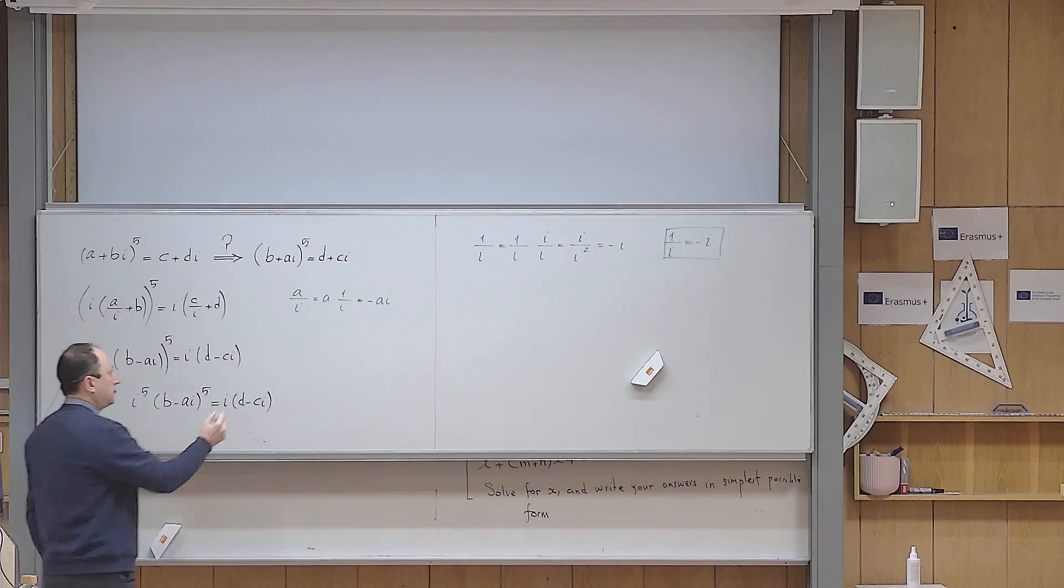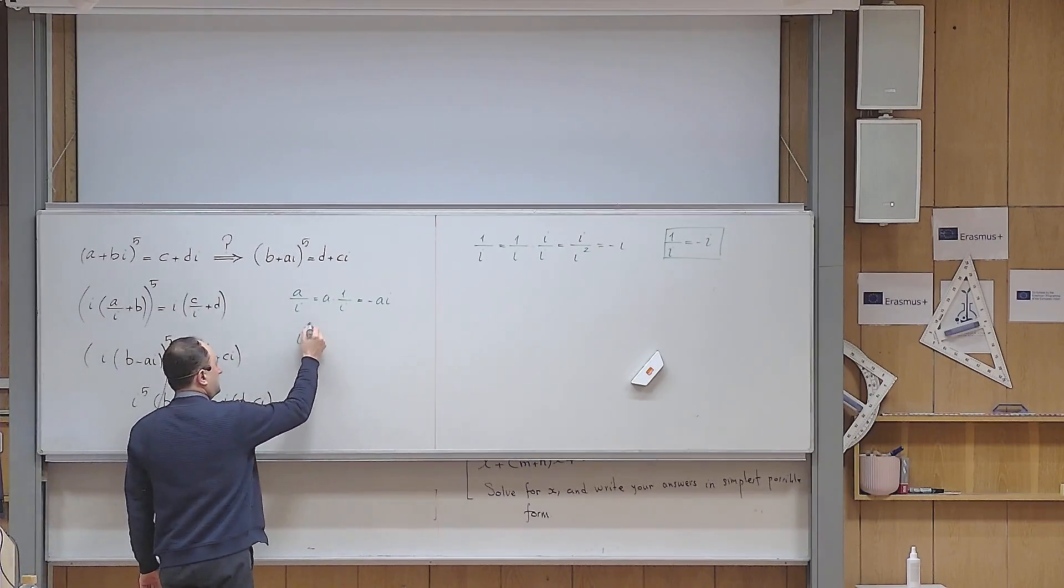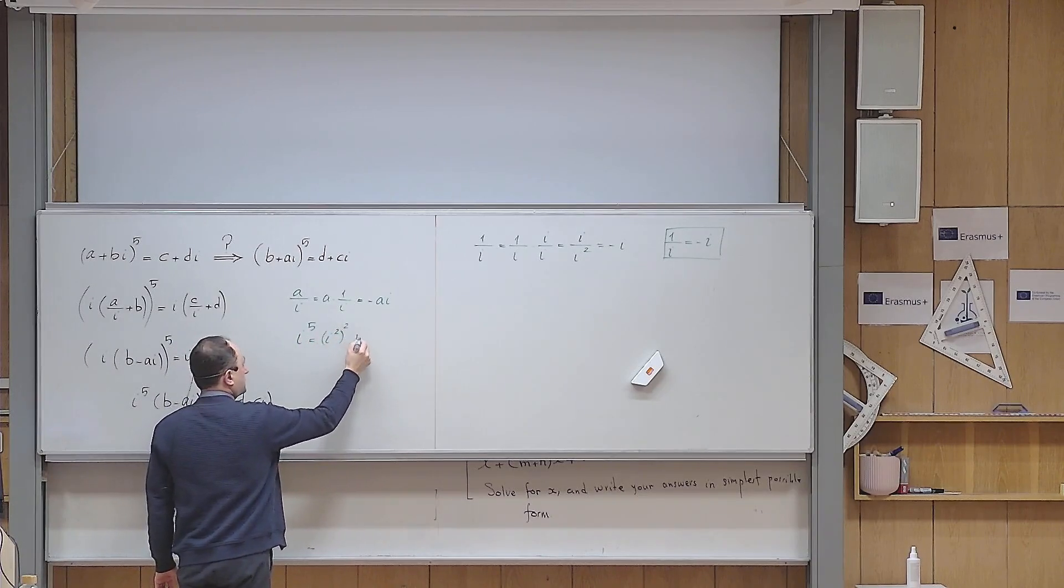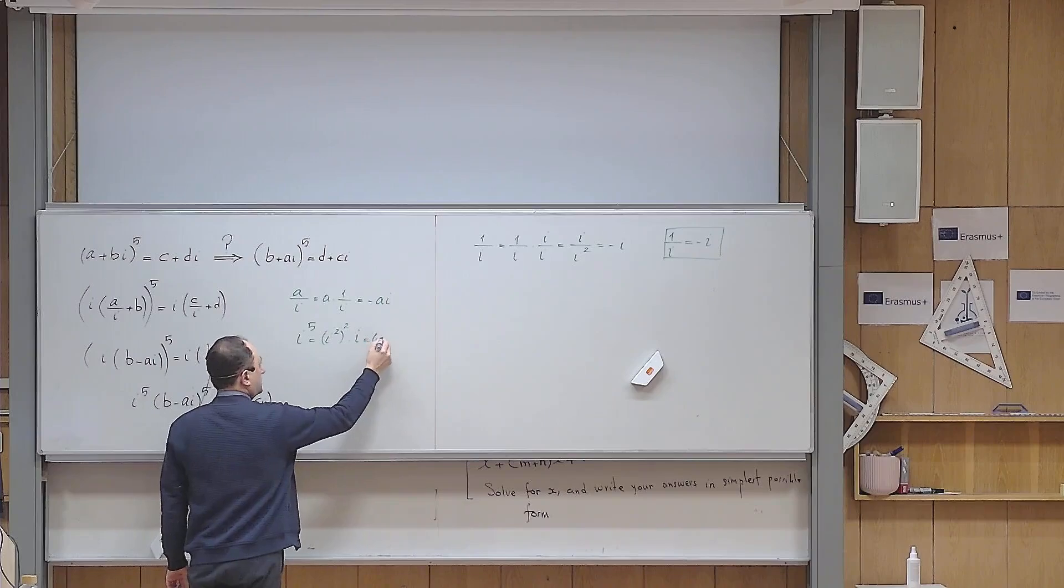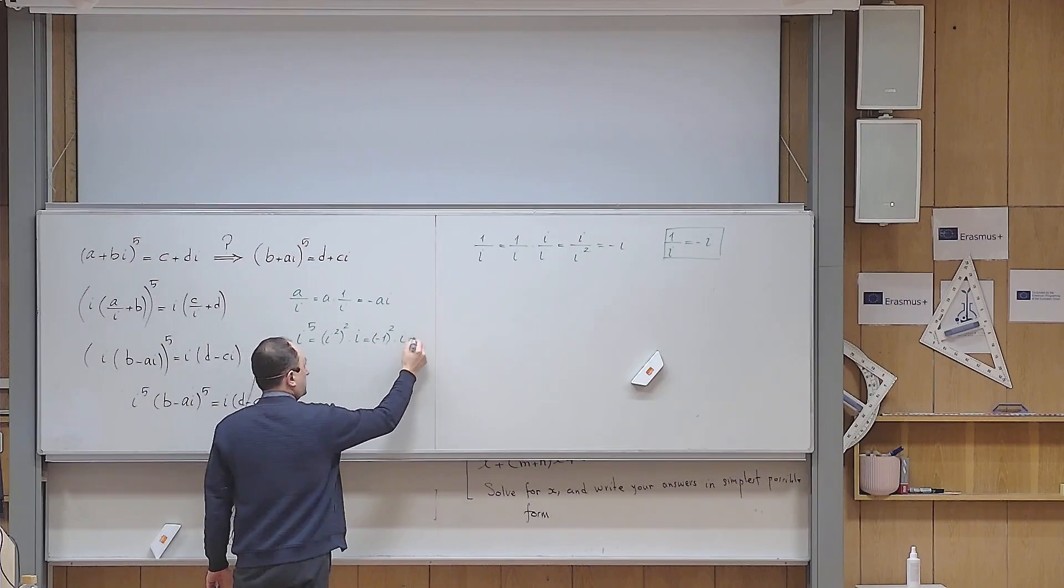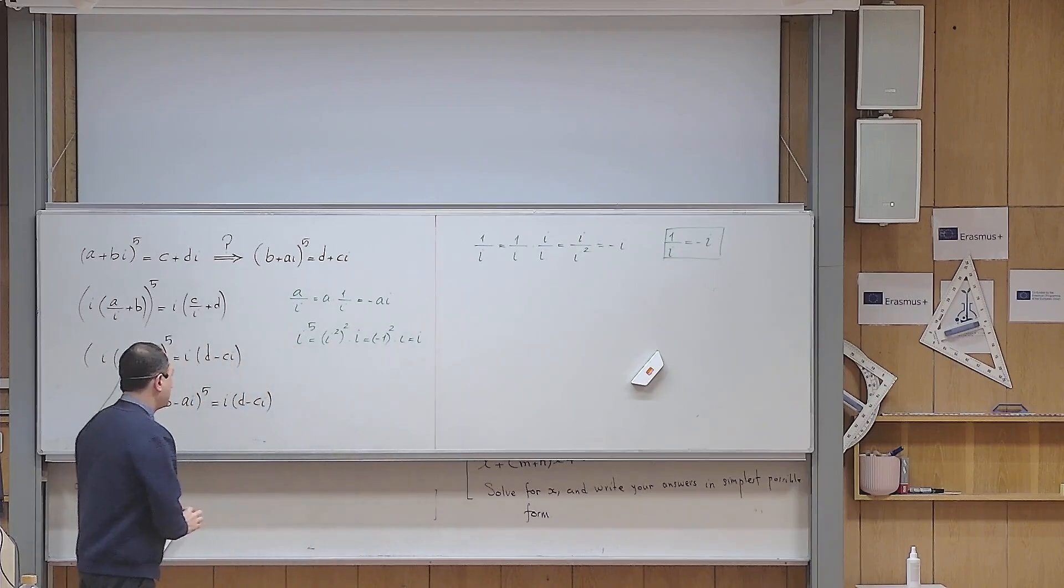But i to the power of 5 can be viewed as i to the power of 2, to the power of 2, times i. But i squared is minus 1. Minus 1 to power 2 is positive 1, so the answer becomes i.